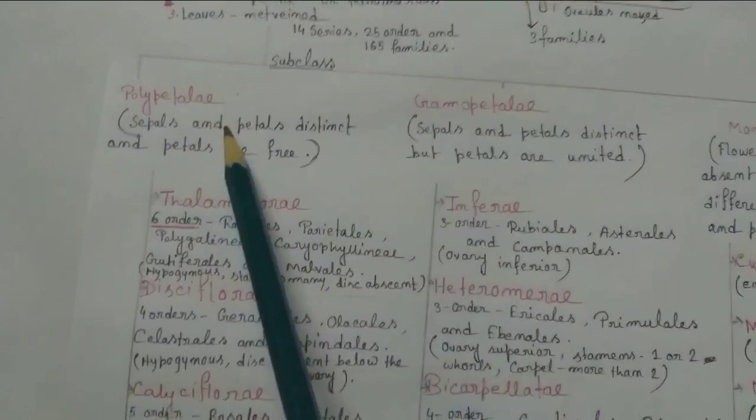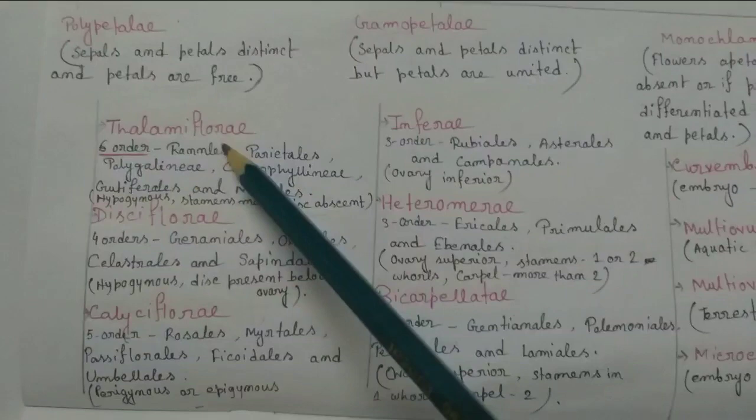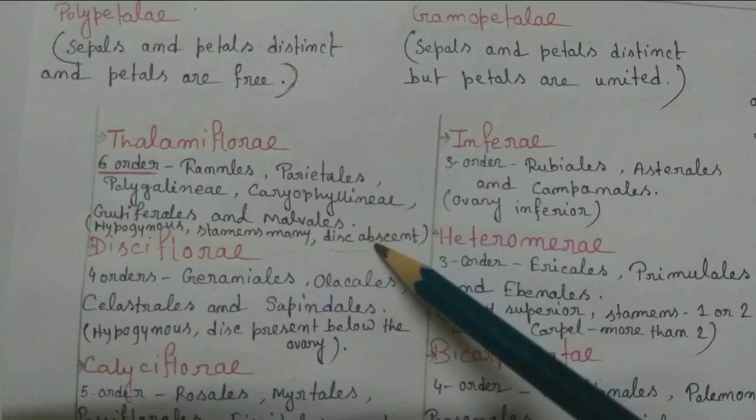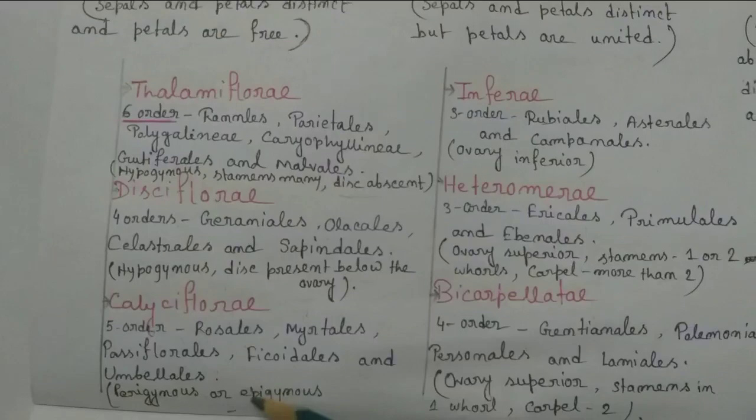The subclass Polypetalae is further divided into three series: Thalamiflorae, Disciflorae, and Calyciflorae. Thalamiflorae characteristics: hypogynous flower, stamens many, disc absent. Disciflorae: hypogynous flower, disc present below the ovary. For Calyciflorae those are perigynous or epigynous flowers.